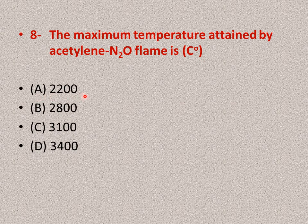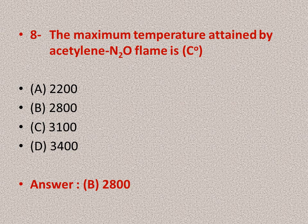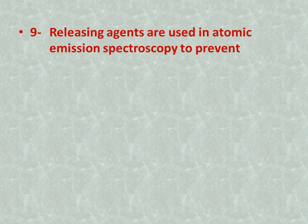Question number eight: the maximum temperature attained by the acetylene-nitrous oxide flame is — options: A is 2200°C, B is 2800°C, C is 3100°C, D is 3400°C. The right answer is B — by using acetylene-nitrous oxide flame we can get a maximum temperature of 2800 degrees centigrade.